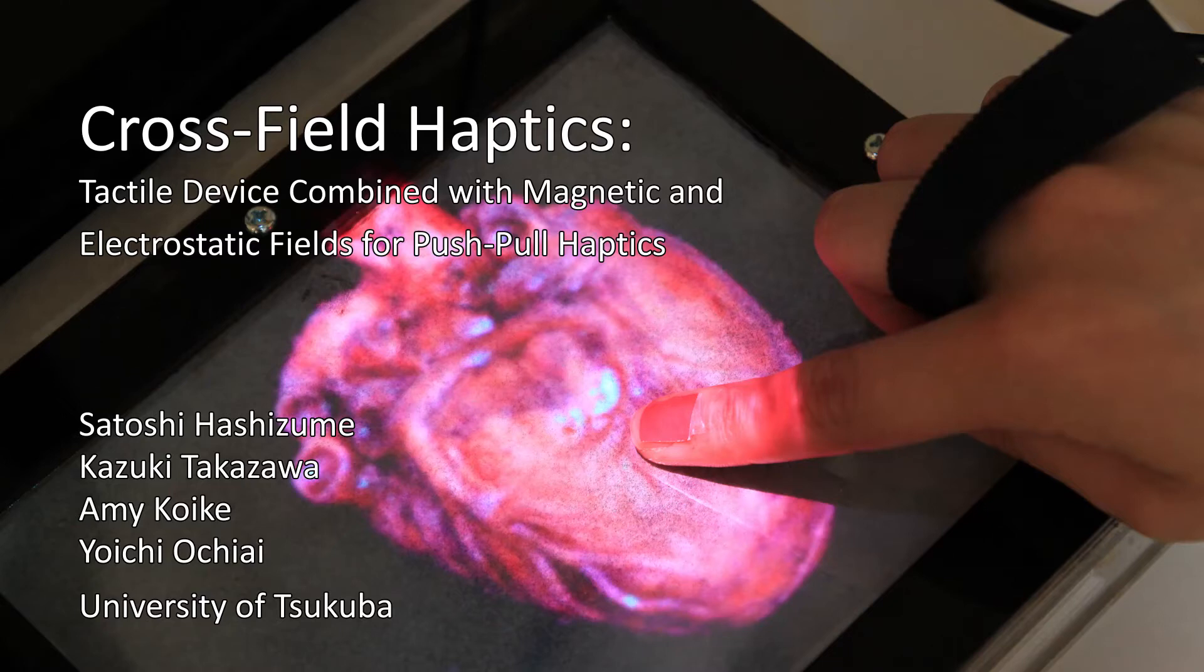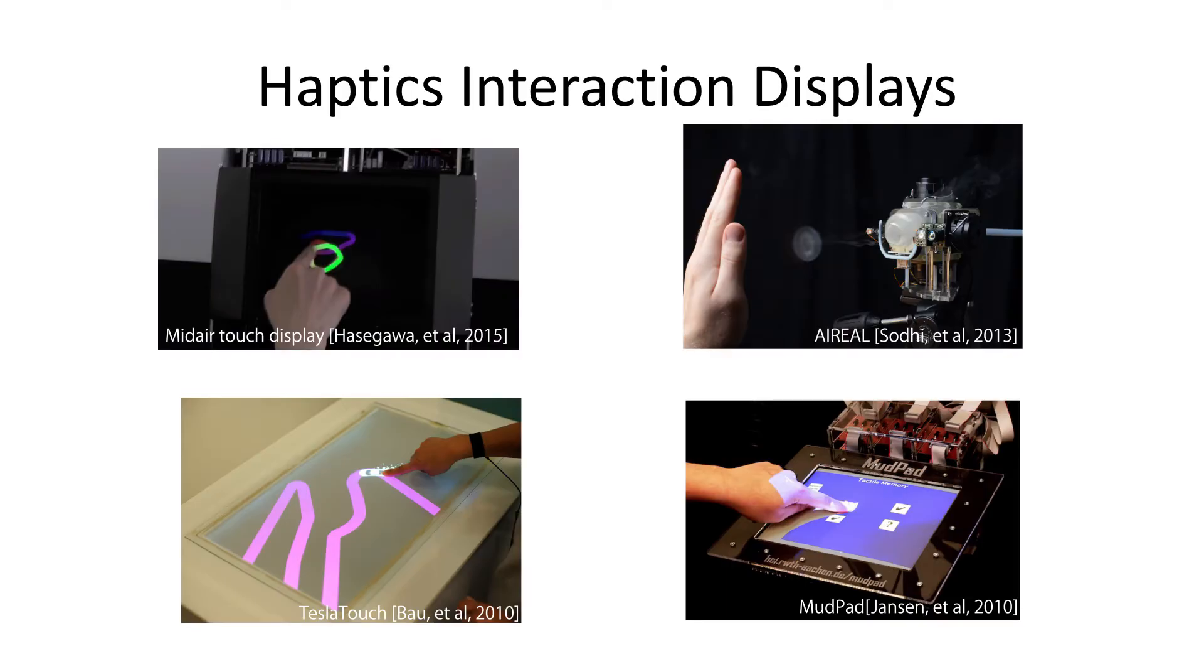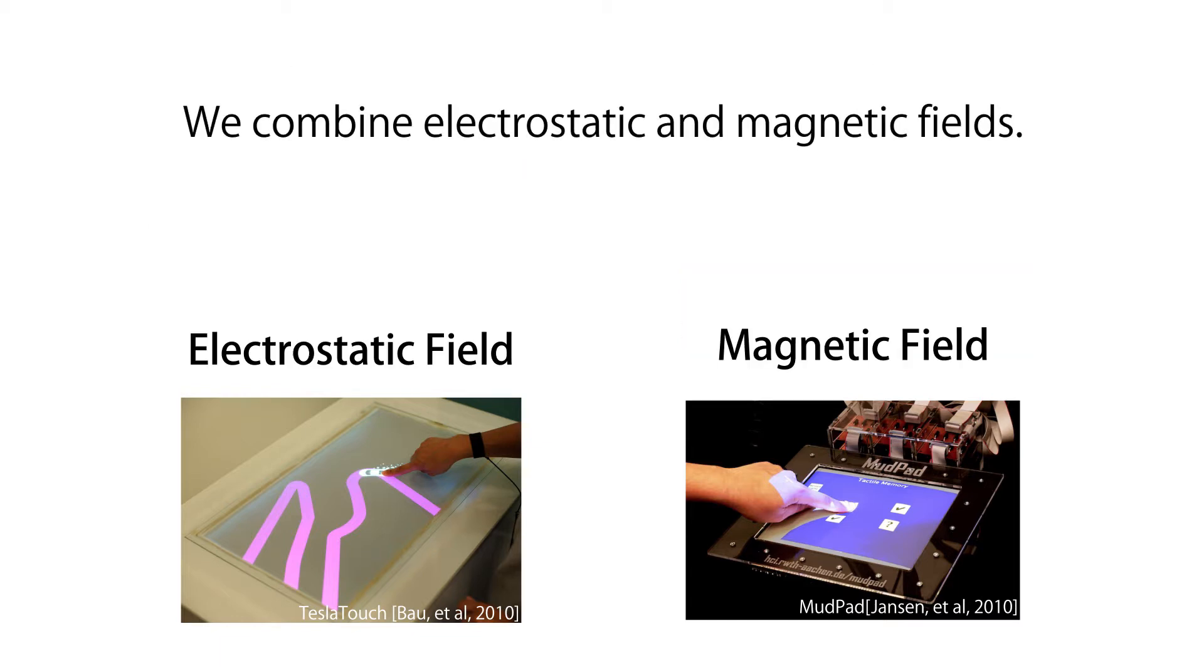Cross-field haptics is a tactile device that combines magnetic and electrostatic fields for push-pull haptics. In conventional research, a single physical quantity is used to render haptic textures. In contrast, our method combines electrostatic and magnetic fields.